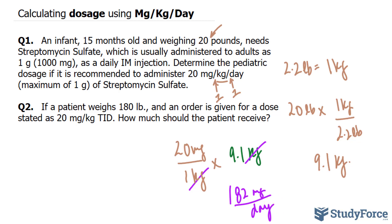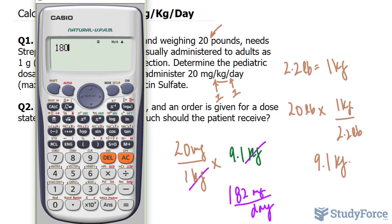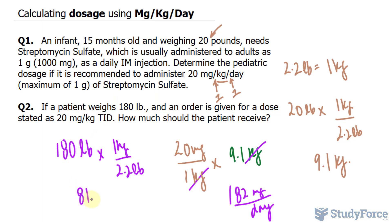In question number two, if a patient weighs 180 pounds and an order is given for a dose stated as 20 milligrams per kilogram TID — three times a day — how much should the patient receive? We have 180 pounds and need to convert it into kilograms. Taking 180 pounds and multiplying by 1 kilogram per 2.2 pounds, 180 divided by 2.2 gives us 81.81, which I'll round to 81.8 kilograms. Notice that the units cancel out mathematically, leaving us with kilograms.